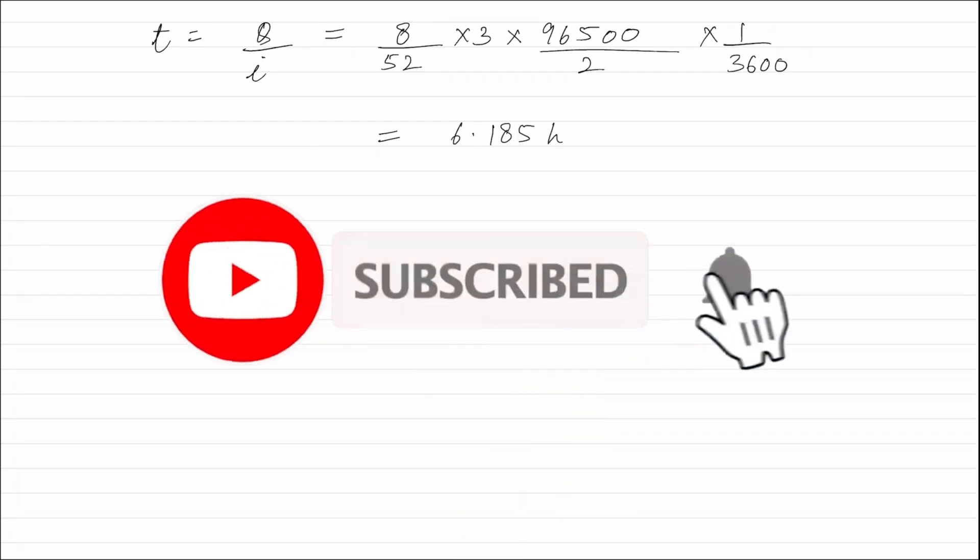T is equal to Q divided by I, and this will be equal to 8 divided by 52 into 3 into 96,500 divided by 2. Dividing this by 3,600 will give the time in hours, and this is equal to 6.185 hours. Therefore, this electrolysis will be conducted for 6.185 hours.